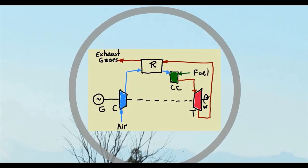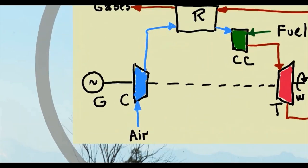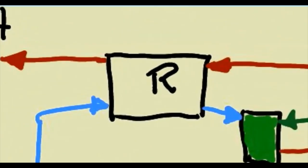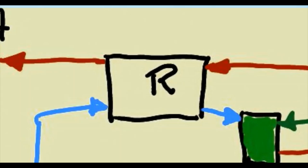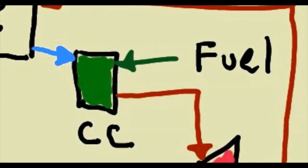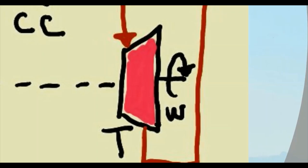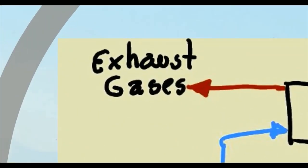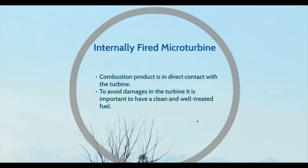Internally fired microturbines typically have a recuperated cycle, and their components are a compressor, a recuperator, a combustion chamber, a turbine, and an electric generator. The cycle starts in the compressor, which takes air at atmospheric pressure. The compressed air is then directed to the recuperator, where the temperature is increased. The compressed and preheated air is then sent to the combustion chamber along with the fuel. The products of combustion go to the turbine, where the gas is expanded, producing the rotation of the turbogenerator shaft. The expanded flue gas goes to the recuperator to transfer heat to the cold compressed air. Finally, the high temperature exhaust gas can still be used in other thermal applications.